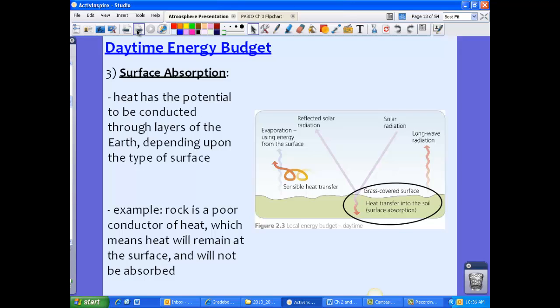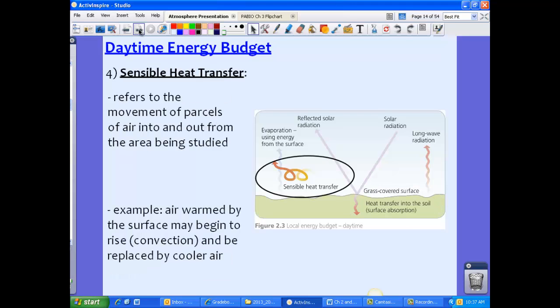Our third component is surface absorption. Now heat has the potential to be conducted through layers of the Earth depending upon the type of surface. So if we know the albedo, we tend to know how much energy is being absorbed by the surface. Sometimes, however, we have surface layers that might not be good conductors of heat. So rock, for instance, is a poor conductor of heat. Heat will pretty much remain at the surface. It's not going to go below the rock. And thus, it's not going to really be absorbed. So if we have examples of soil, soil is a little bit better at conducting heat. Not much, but a little bit better. Whereas we have other substances, and that stuff's going to be absorbed right away. So we have to be careful of what type of surface we're talking about in order to understand the absorption. If you think of this in terms of urban areas, so your concrete jungles, remember concrete is a poor conductor of heat as well. So not a lot of energy will be conducted into the ground at these parts.